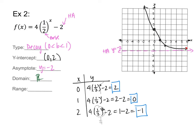The domain is all real numbers. The right side points to positive infinity and the left side points to negative infinity. For the range: the curve points up to positive infinity, but the lowest y value it can reach is the horizontal asymptote at y = −2. So the range is (−2, +∞) with parentheses since we can't touch the asymptote or infinity.